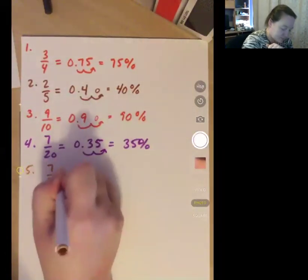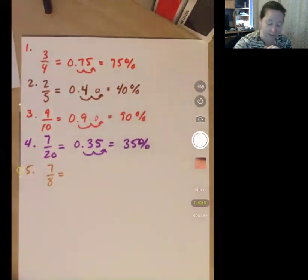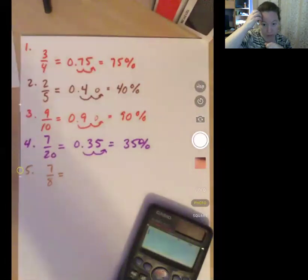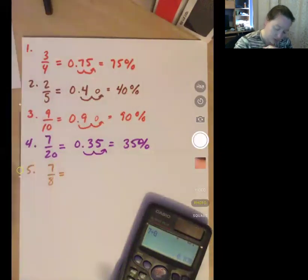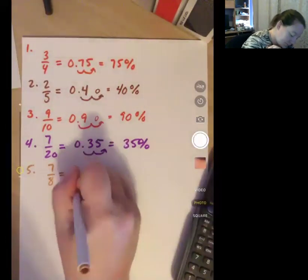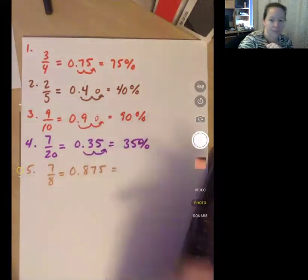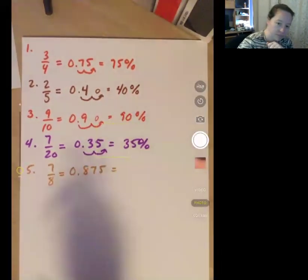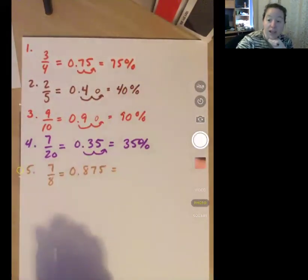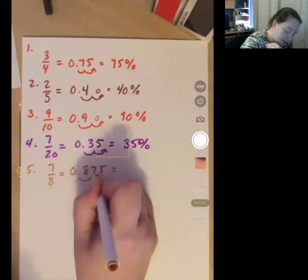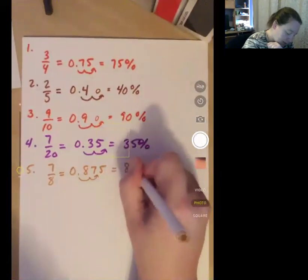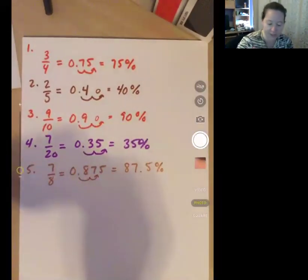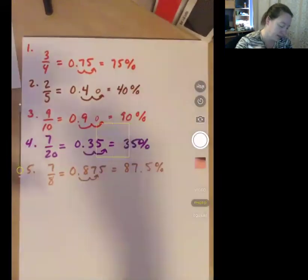Number five, seven eighths. I'm actually going to plug this one in. The other ones I was doing with mental math because I just know it. Seven divided by eight equals 0.875. It has three numbers. I still move it twice. I don't care that it has three numbers. I move it twice. So it becomes 87.5%.